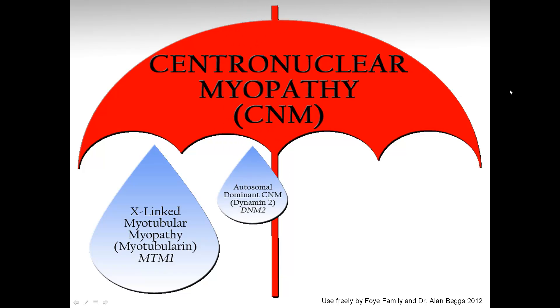The next subtype to be discovered was autosomal dominant centronuclear myopathy. Here the affected gene is called DNM2, and it affects a protein called dynamin2.